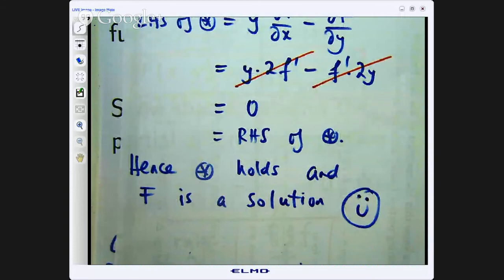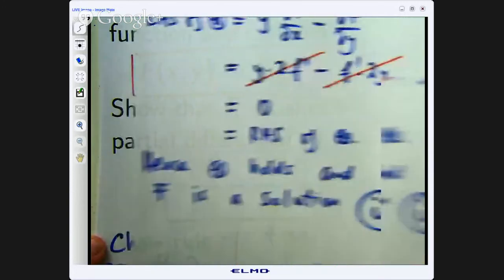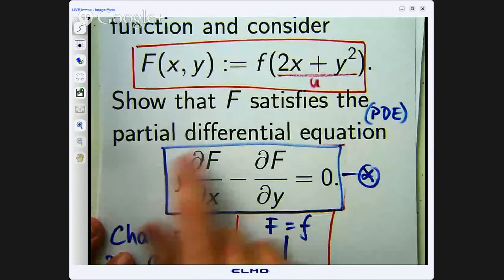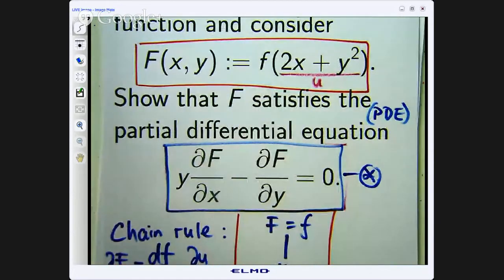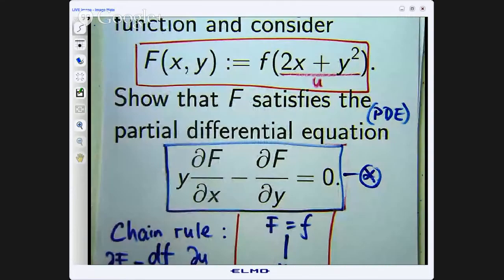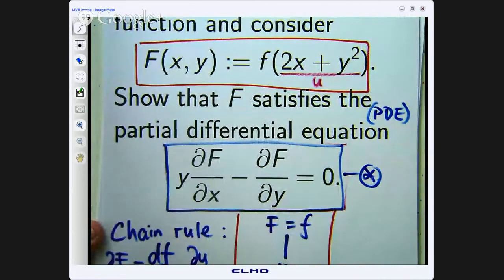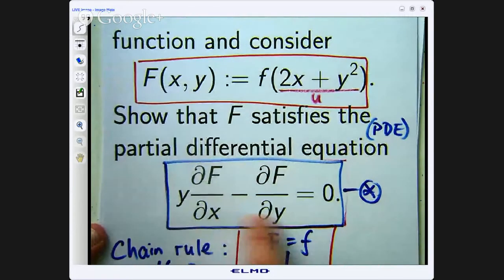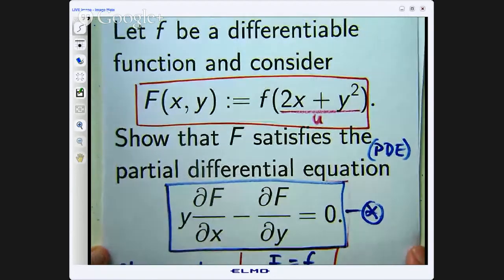Okay. So for these kinds of problems the ideas are pretty much the same. You're given some function here. Here we did not know what little f was but it didn't matter. All we need to know was that we could apply the chain rule. And you're given some partial differential equation. Show that this partial differential equation holds.